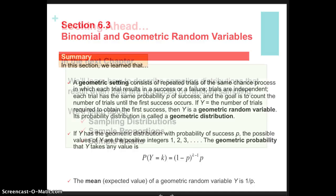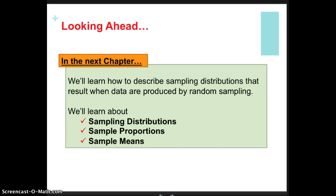This is what we've learned, and in the next chapter we'll use this information to create sampling distributions for both proportions and means. Good luck on your chapter 6 test.